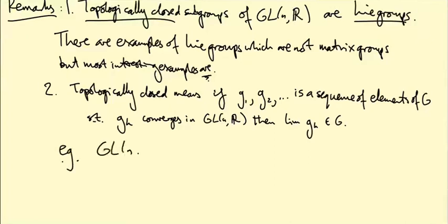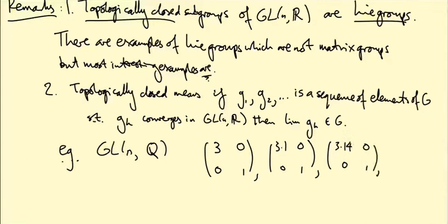Let's take GL(n,Q), so matrices with rational coefficients. It's certainly a group, but it's not a closed subgroup of GL(n,R), because, for example, you have this rather silly-looking sequence: 3, 0, 0, 1; then 3.1, 0, 0, 1; then 3.14, 0, 0, 1, dot dot dot. And they're all rational numbers, right? 3.14 is 314 over 100. But the limit of this sequence, if I knew what to write next, would be π, 0, 0, 1. Right, I'm just writing more and more digits of π each time. And that's not a rational matrix. π is not a rational number. So this is not topologically closed.